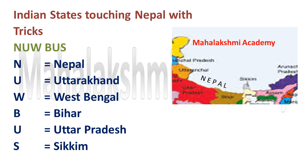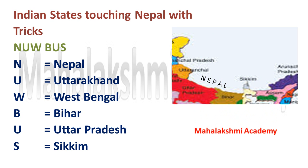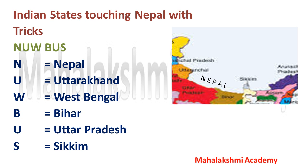Next is Nepal. The trick to learn the states touching boundaries with Nepal is 'New Bus' — note the spelling is N-U-W-B-U-S, not the regular spelling of 'new.' N stands for Nepal, U stands for Uttarakhand, W stands for West Bengal, B stands for Bihar, U stands for Uttar Pradesh, and S stands for Sikkim.